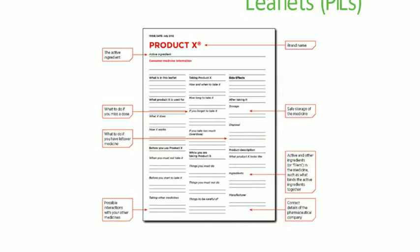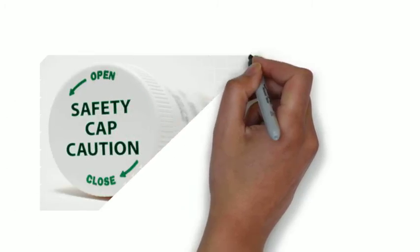PILs must include the identification of the medicinal product, the therapeutic indications, a list of information necessary before taking the medication such as contraindications and interactions — similar subheadings to those found in the BNF — the necessary and usual instructions for proper use, a description of undesirable effects during normal use and the action to take, and a reference to the expiry date and the date the leaflet was last revised. Any drug box in the pharmacy should contain a PIL, or supplementary PILs may be available nearby to accompany dispensed products.